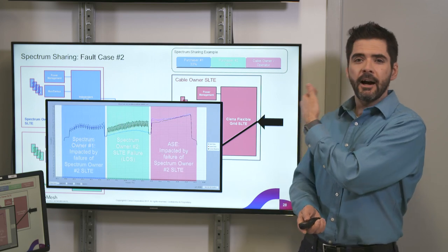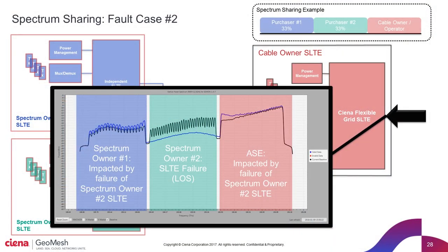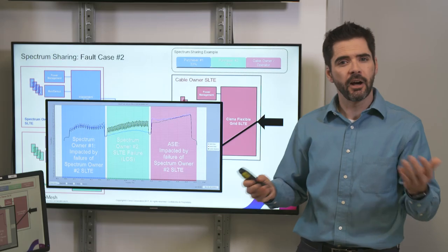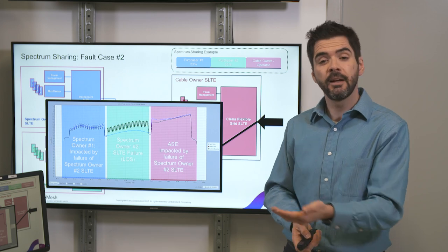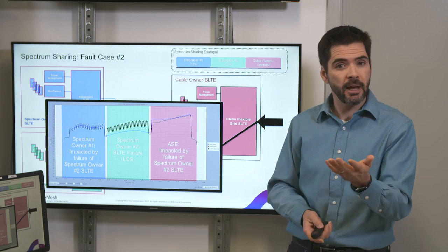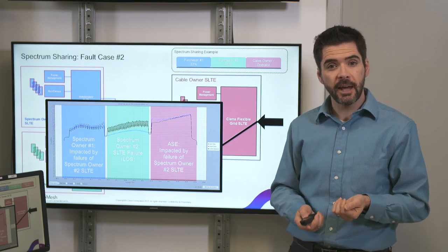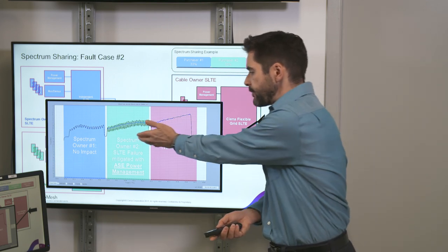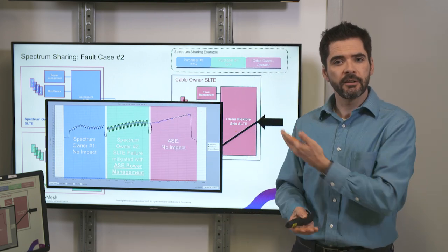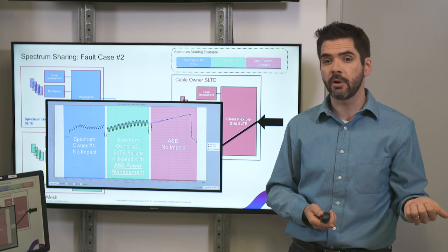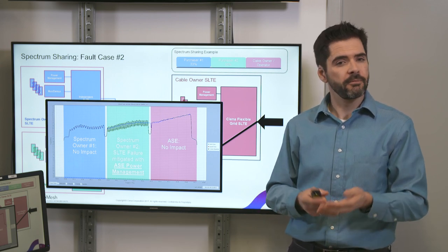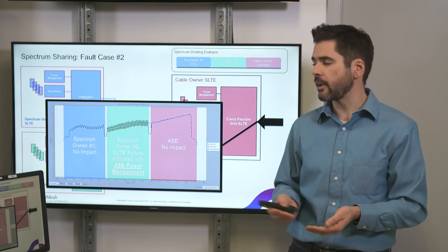Why is this bad? With total power controlled amplifiers in a submarine cable, when we don't properly load all of the spectrum, we change the propagation environment for the other portions. So a failure for spectrum owner number two is impacting spectrum owner number one and the cable owner. To fix this, we use the ASE power management feature of the terminal: by replacing spectrum owner number two's missing spectrum with ASE in the cable owner's SLTE, we bring the system back to its nominal operating state and spectrum owner number one and the cable owner are returned to normal operation.